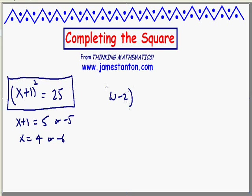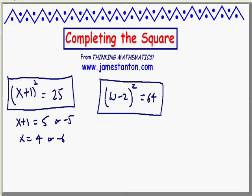Let's try another one. (w-2)² = 64. Pretty easy. Something squared is 64. My something, my w-2, must be 8 or -8. Adding 2 throughout, it tells me w must be 10 or -6.